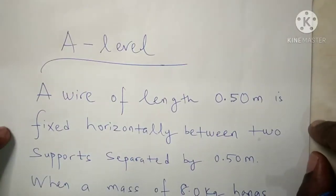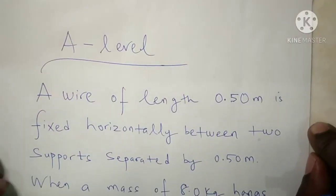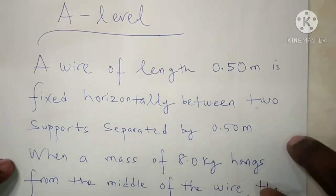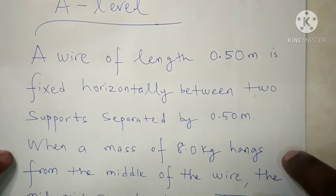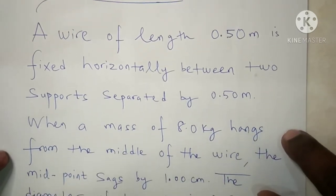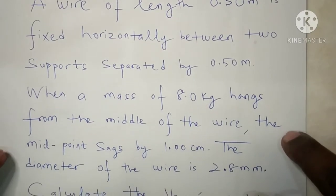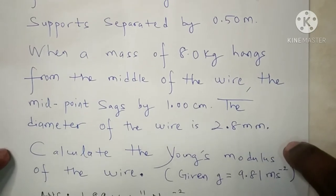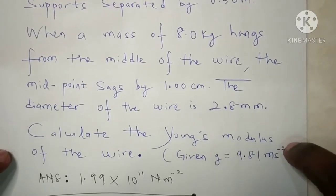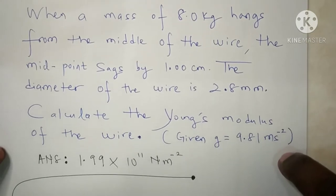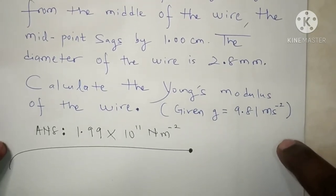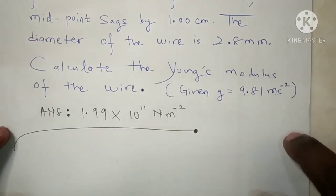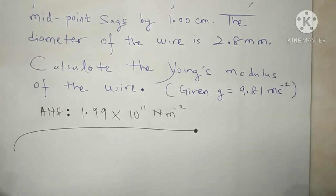Let us try to attempt these A-level questions related to deformation of solids. A wire of length 0.5 m is fixed horizontally between two supports separated by 0.5 m. When a mass of 8.0 kg hangs from the middle of the wire, the midpoint sags by 1 cm. The diameter of the wire is 2.8 mm. Calculate the Young's modulus of the wire given g equals 9.81 m/s². The final answer is 1.99 × 10¹¹ N/m².